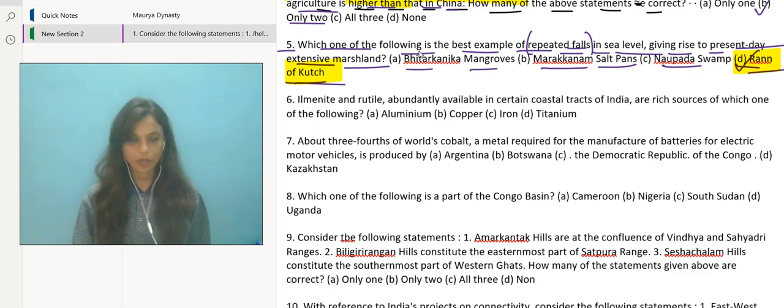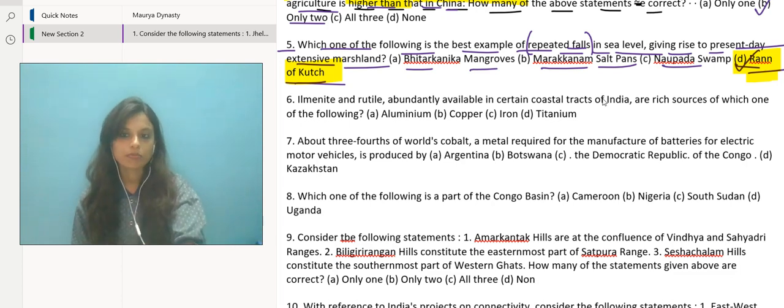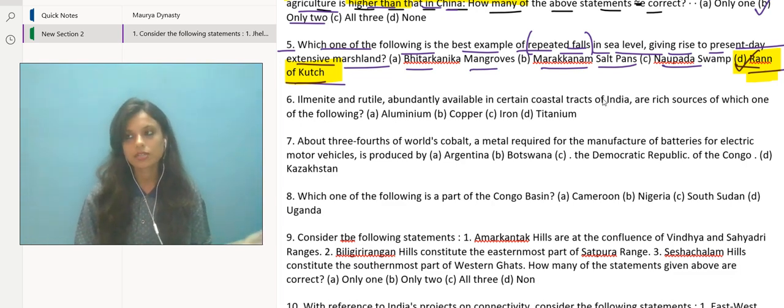Rann of Kutch is located in the Thar Desert region of Gujarat, and there are certain parts of this which is in Pakistan also. This area is well known for its unique landscape which is characterized by salt flats, marshy areas, and also shallow wetlands. The formation of Rann of Kutch is attributed to multiple instances of sea level falls and geological processes over time. These salt lands are formed because of the sea level falls and other geological processes that take place over here. So our correct answer was D.